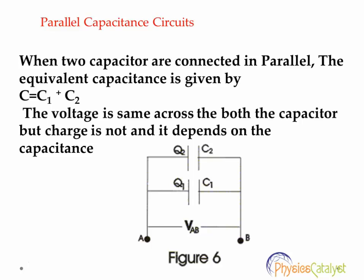First one is parallel capacitance circuit. When two capacitors are connected in parallel, the equivalent capacitance is given by C equals C1 plus C2.